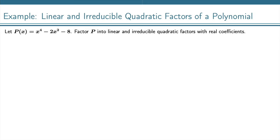Let P(x) equal x to the fourth minus 2x squared minus 8. Factor P into linear and irreducible quadratic factors with real coefficients.